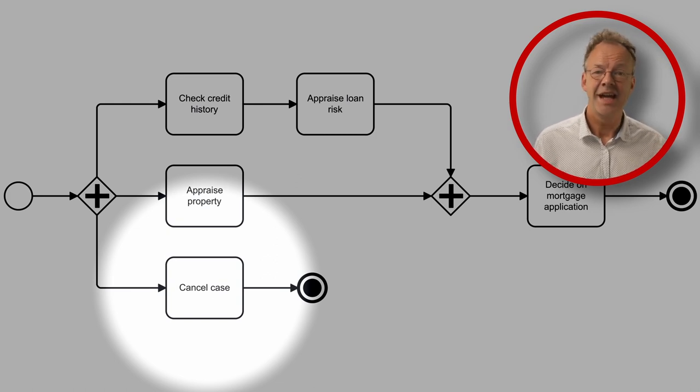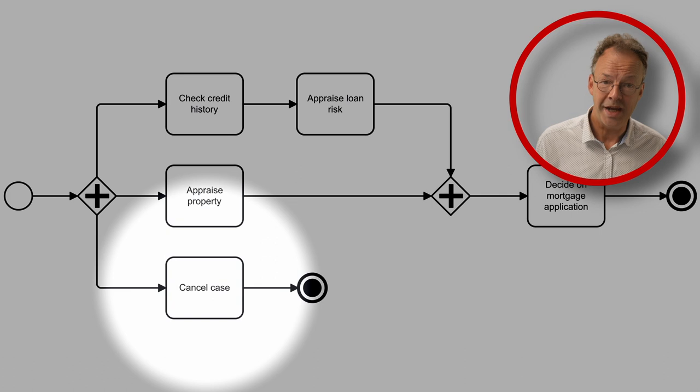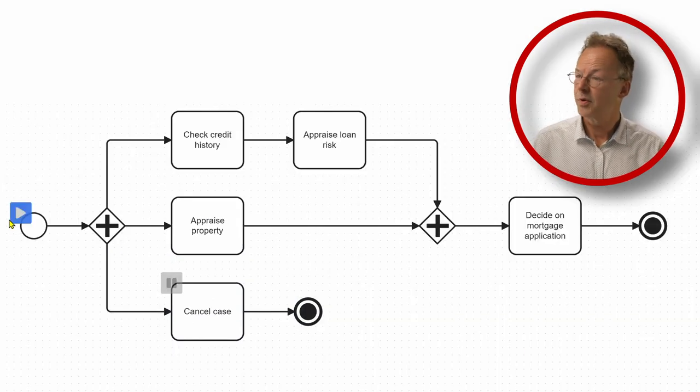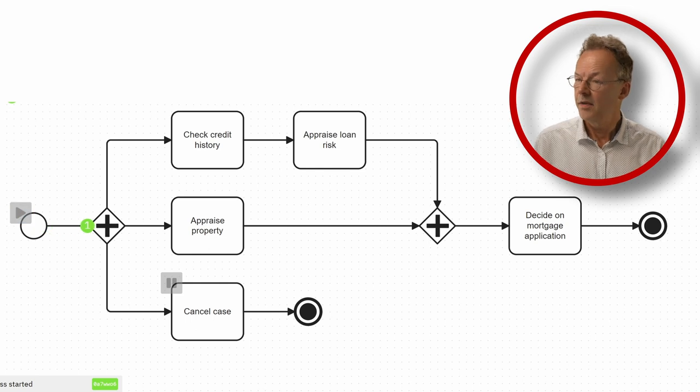we put a cancel case task after a parallel gateway at the start of the process. So here we start our process and in the first case, we finish normally without canceling.